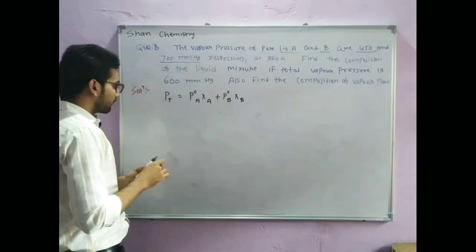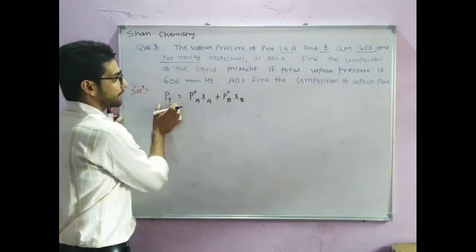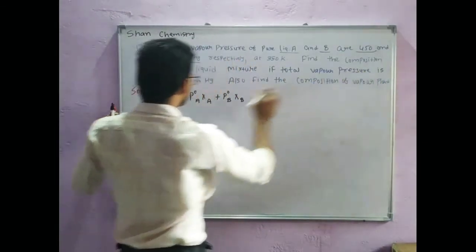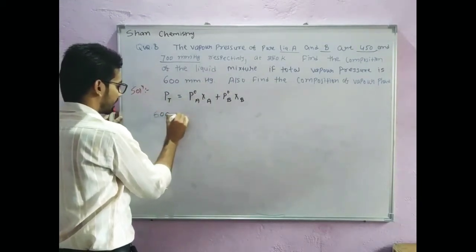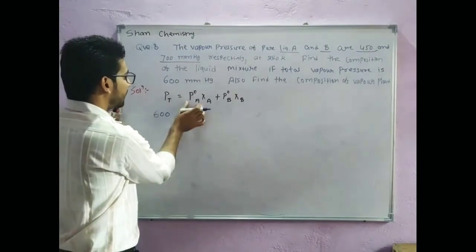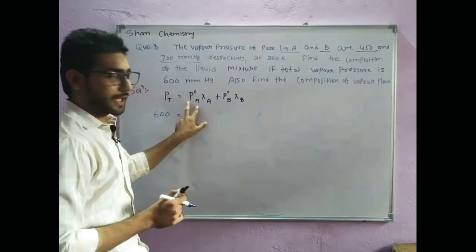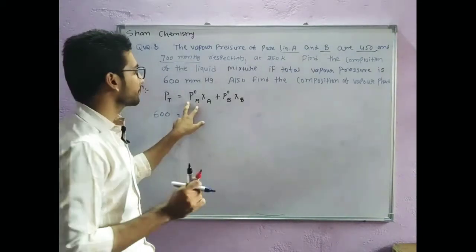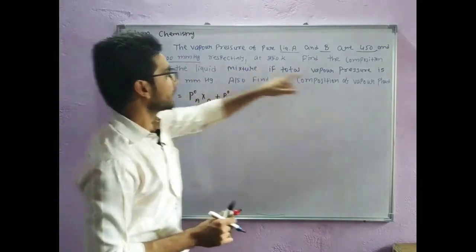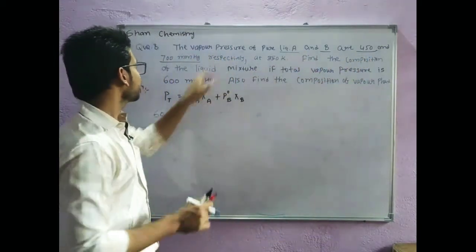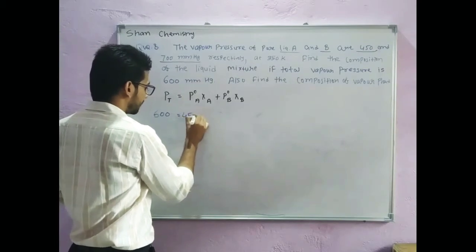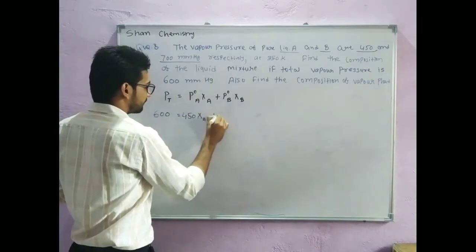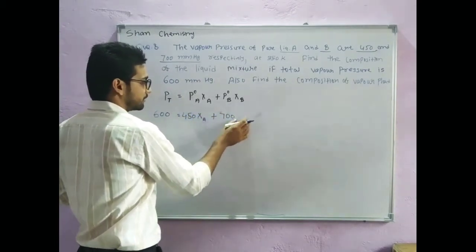Now, what is the value of P_total? Total vapor pressure is 600 mm of Hg. P°_A means the vapor pressure of pure liquid A, which is 450, and P°_B is 700. So this gives us: 450 times X_A plus 700 times X_B.